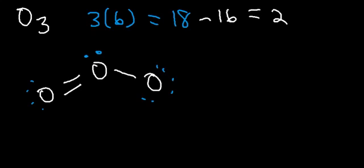So every oxygen atom has 8 electrons around it. They all satisfy their octet requirement, and we have a total of 18 electrons.